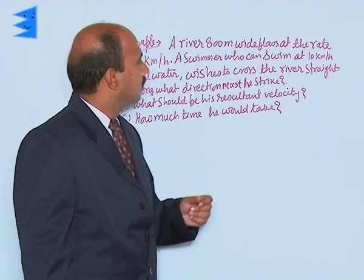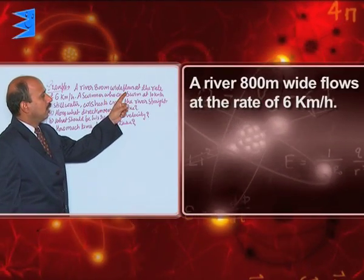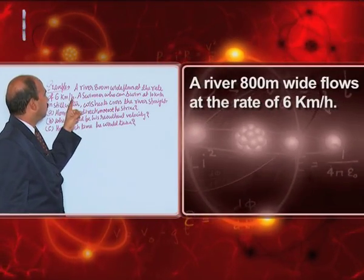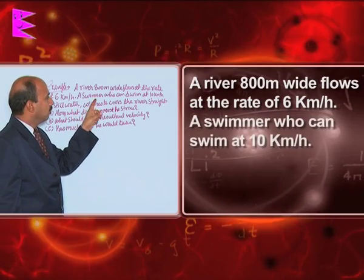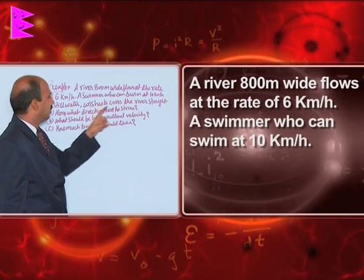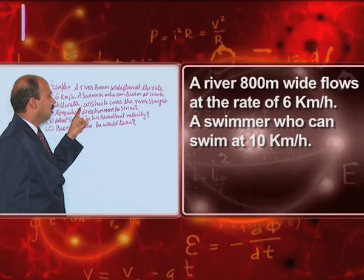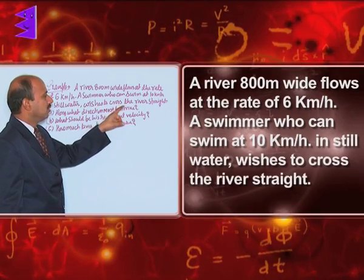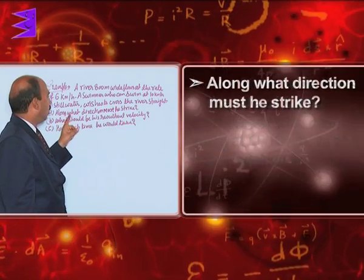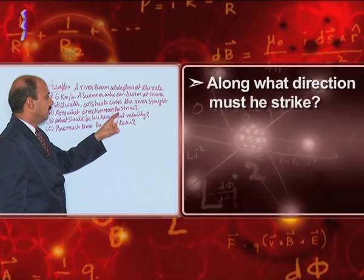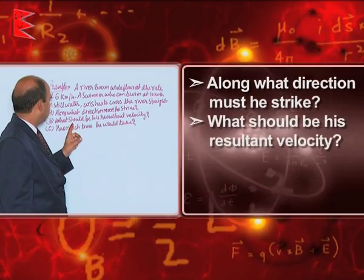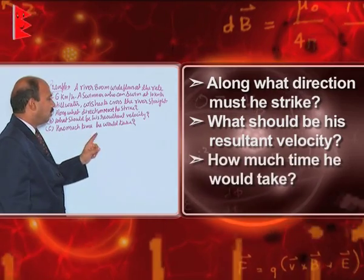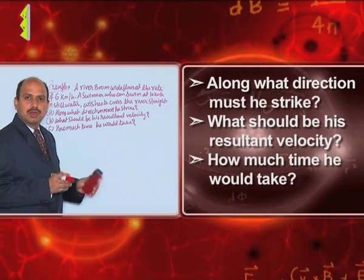Now, see in this example, a river 800 meter wide flows at the rate of 6 kilometer per hour. A swimmer who can swim at 10 kilometer per hour in still water wishes to cross the river straight. Along what direction must he strike, what should be his resultant velocity, and how much time he would take?